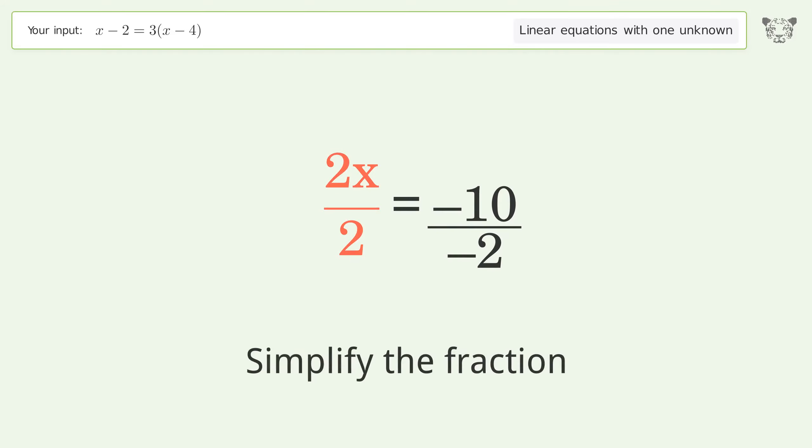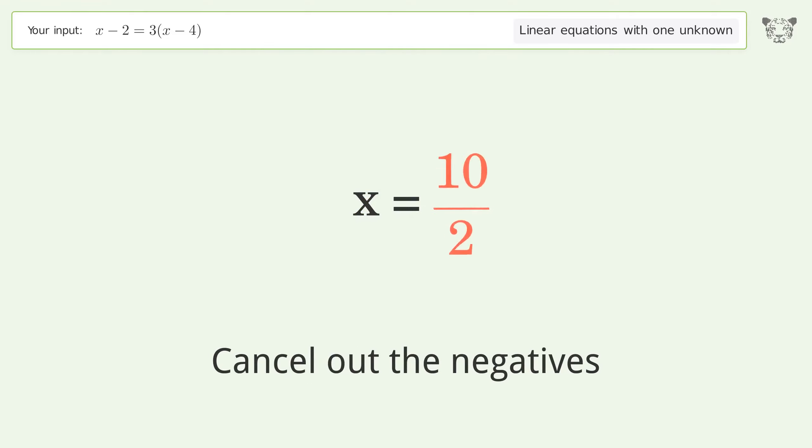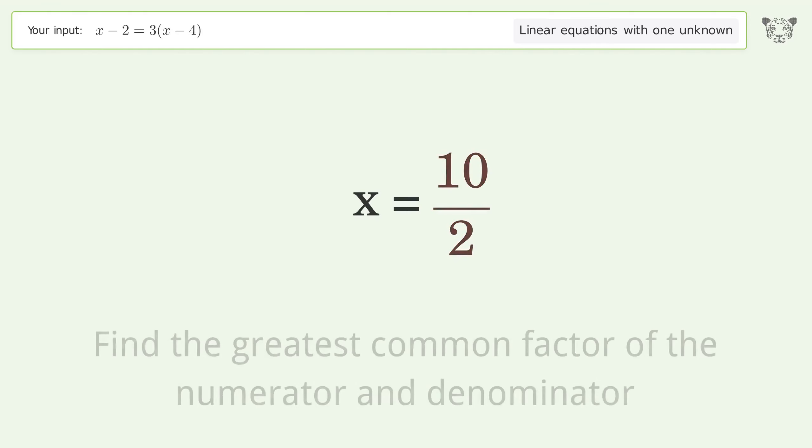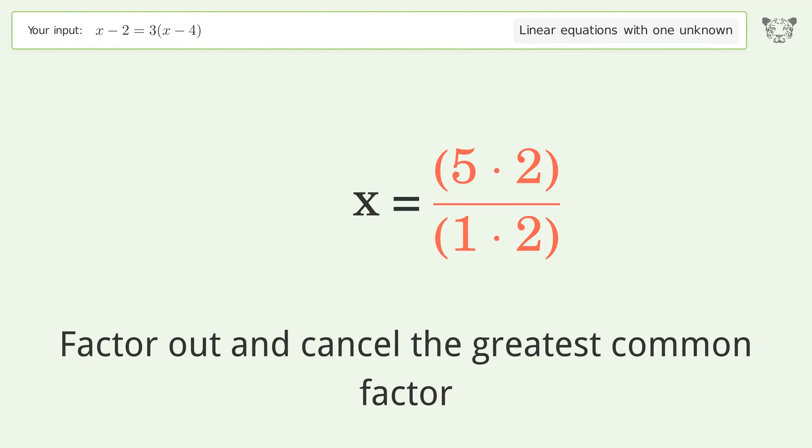Simplify the fraction, cancel out the negatives, find the greatest common factor of the numerator and denominator, then factor out and cancel the greatest common factor.